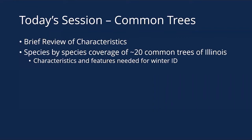Today we're going to cover about 20 different species that are fairly common across Illinois, focusing on characteristics and features needed for winter ID. There are so many trees in Illinois but covering 20 gives us a little less than three minutes per species in detail. We had to limit it to 20 because of our one-hour time constraint, so there are many other species we won't be able to cover.